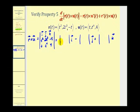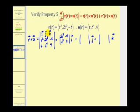The first two by two determinant is formed by eliminating row one and column one, giving us two t cubed, negative t, t to the fourth, and four. The second two by two determinant is formed by eliminating row one and column two: t squared, negative t, t, and four. The last two by two determinant, eliminating row one and column three, gives us t squared, two t to the third, t, and t to the fourth.